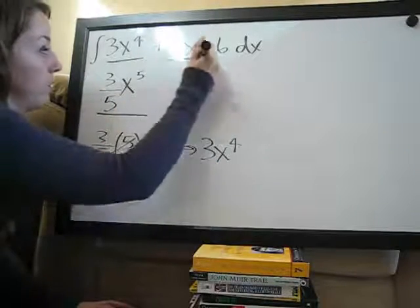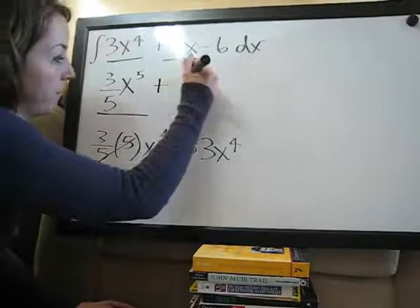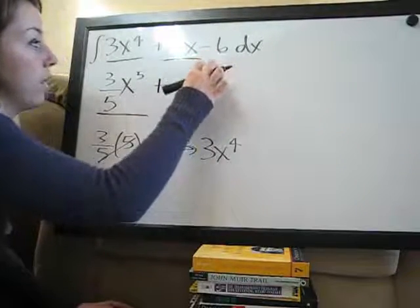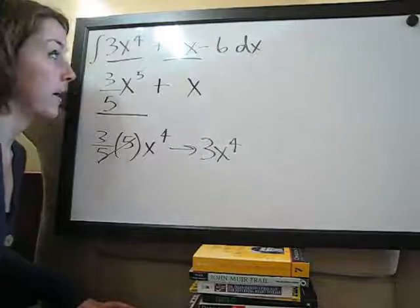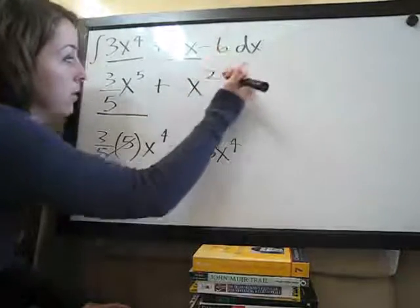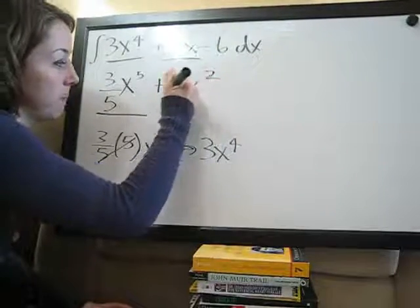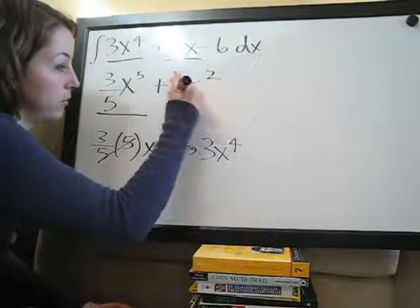So, we did that term, now we're going to move on to this one. x, again, the exponent up here is 1. We're going to add 1 to it, so it's 2. And then, of course, the coefficient divided by the new exponent, which is 2.